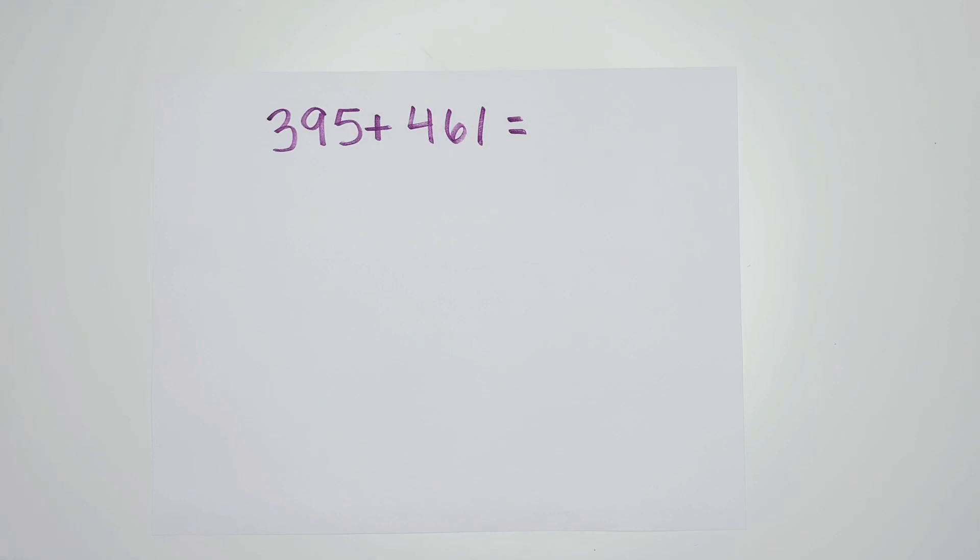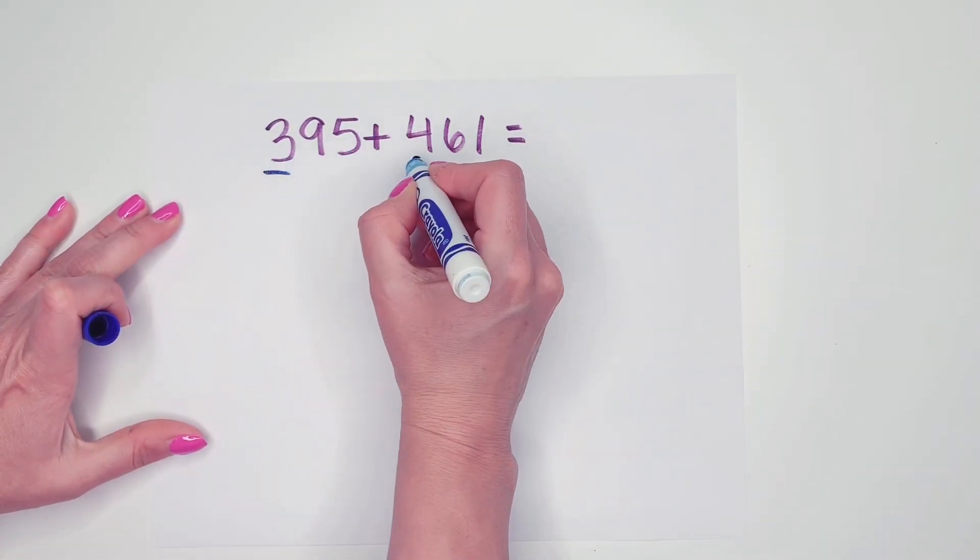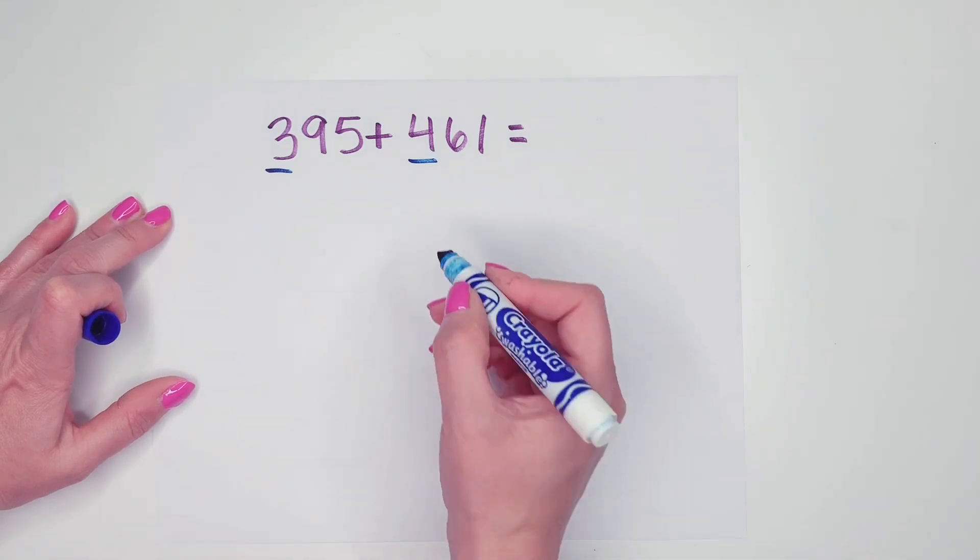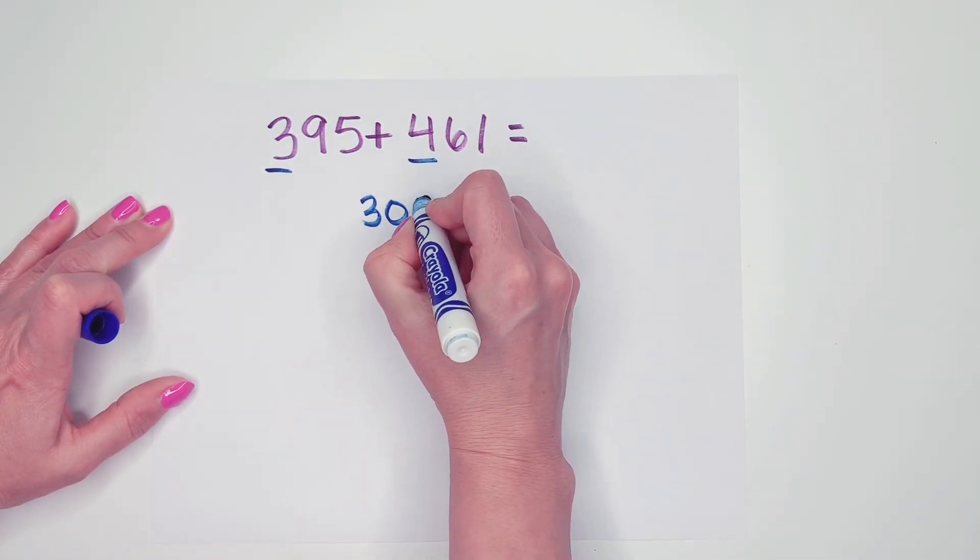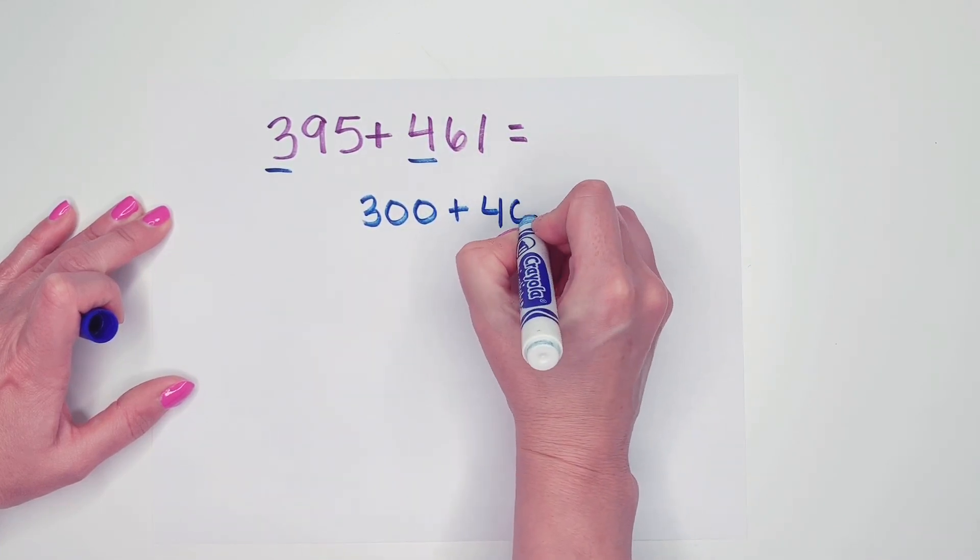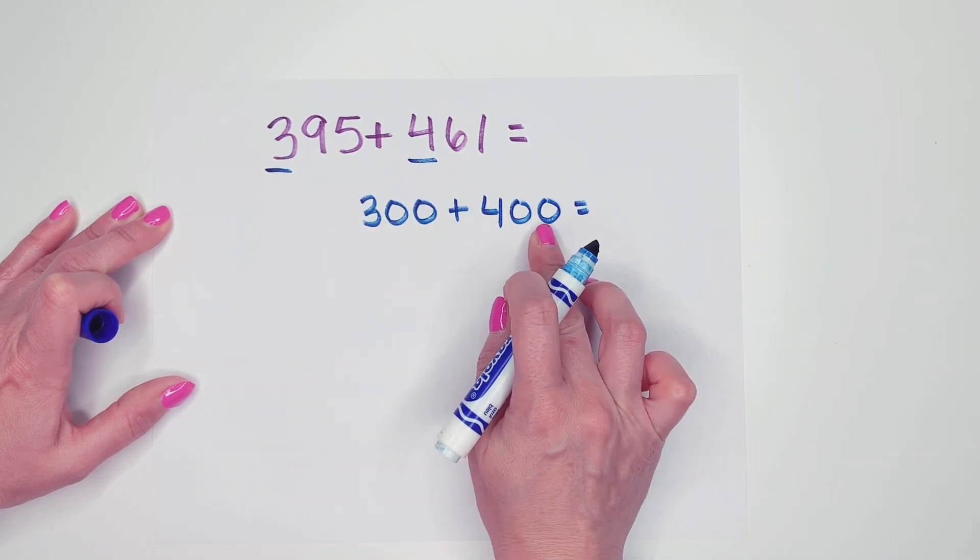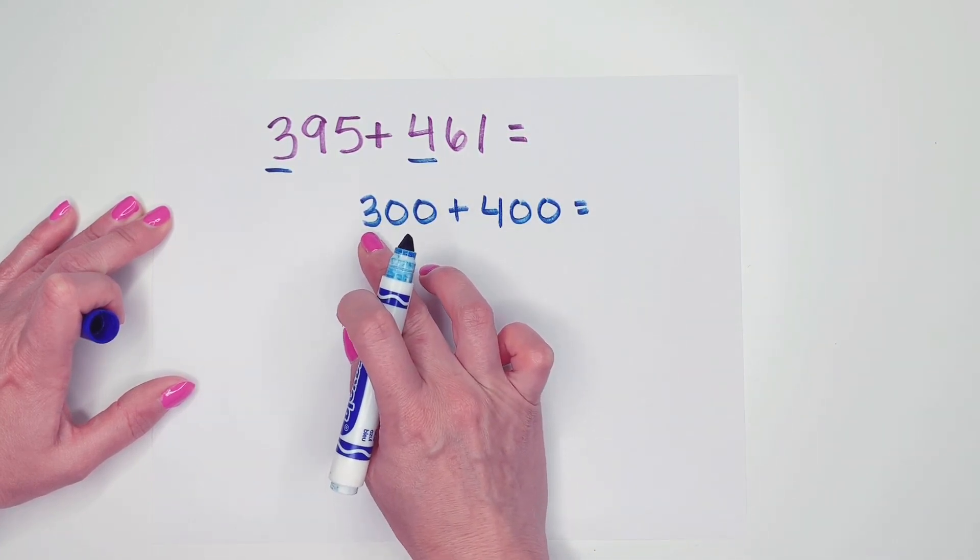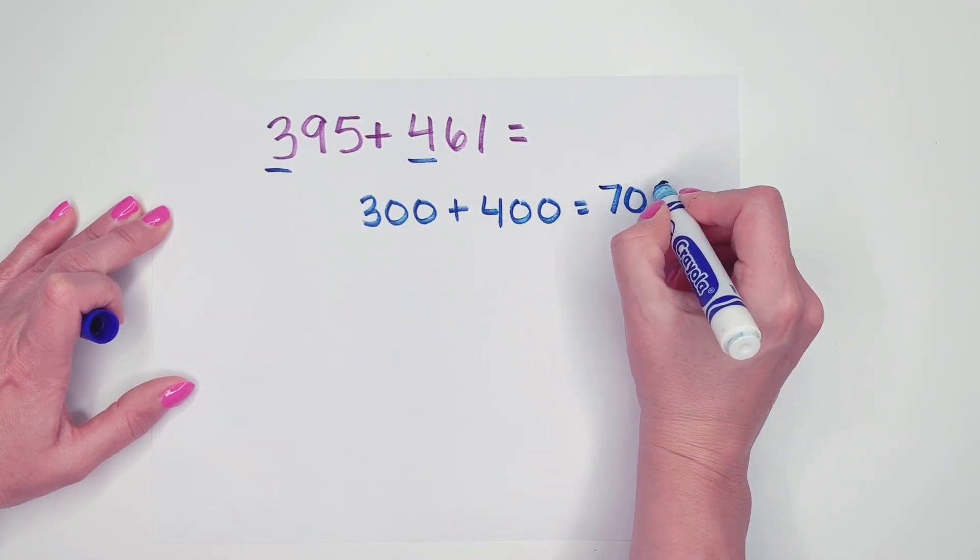The first thing we're going to do is look at our hundreds. Then we're going to add them together. So this 3 represents 300. The 4 is the value of 400. 300 plus 400. Well I know 4 plus 3 is 7, so 400 plus 300 must be 700.